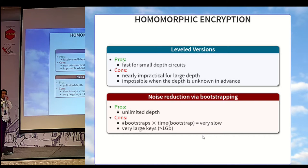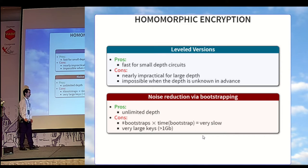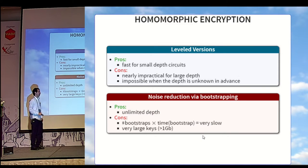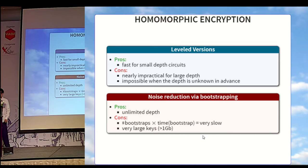The other possibility is to include a noise reduction technique, usually named bootstrapping. That will allow you to evaluate unlimited depth circuits, but you have to keep in mind that each bootstrapping takes time, and that you will have to bootstrap a lot of ciphertext all around your circuits. Overall, it is very slow, and it requires very large keys. In 2015, the minimum size was 1 gigabit. In this talk, we'll improve most of the counterparts.